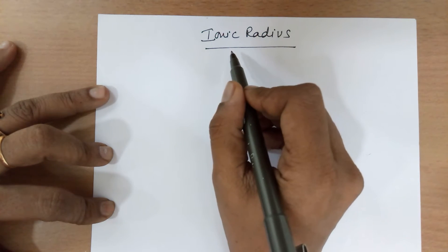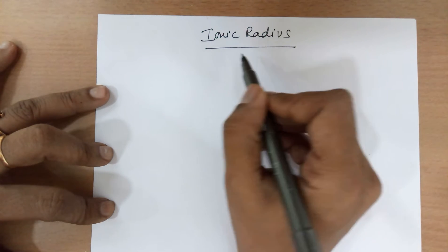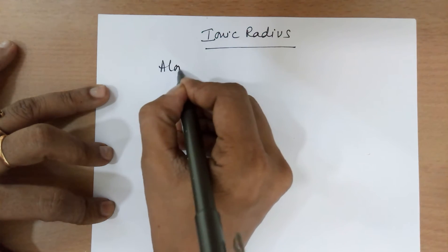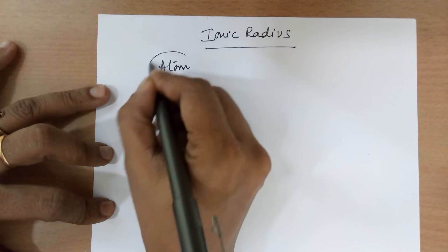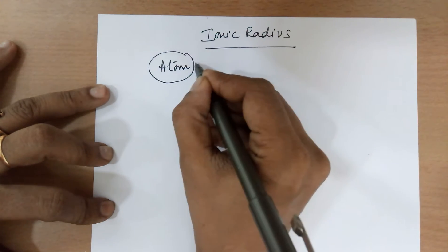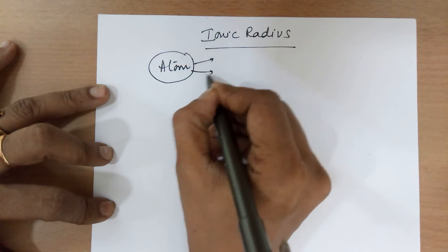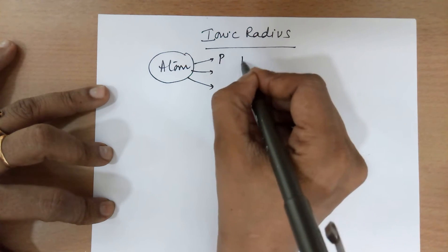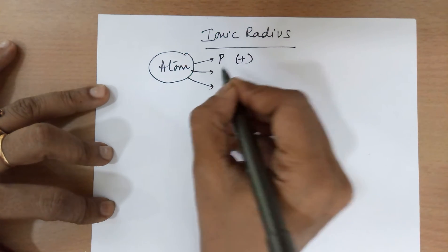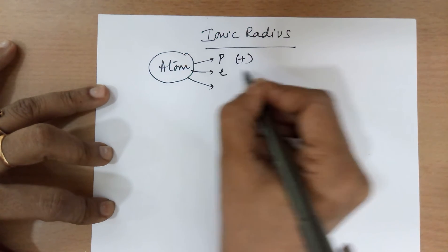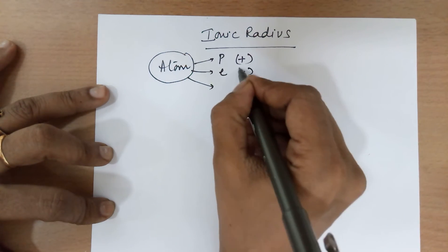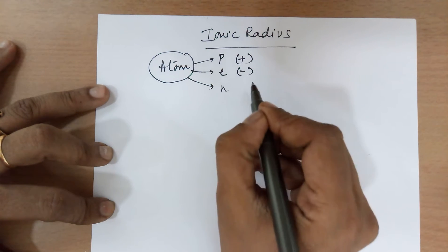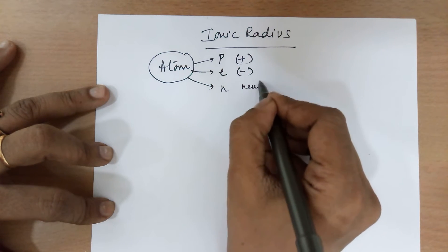For that ions information, you need to know what is an atom. An atom has got subatomic particles — three of them: protons, which are positively charged; electrons, which are negatively charged; and neutrons, which are neutral.